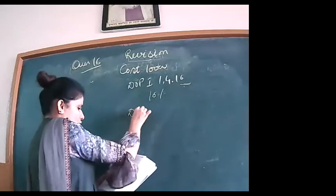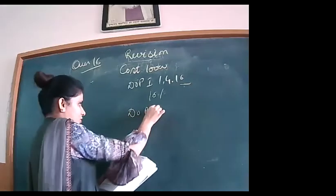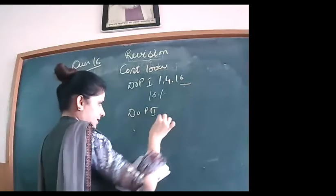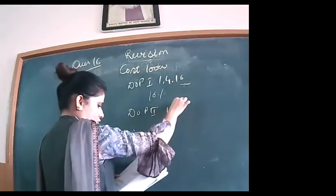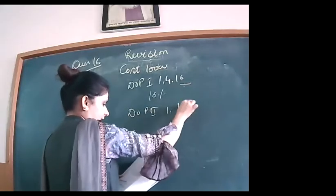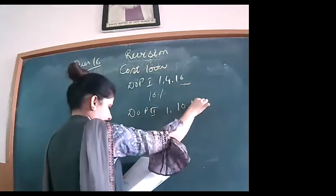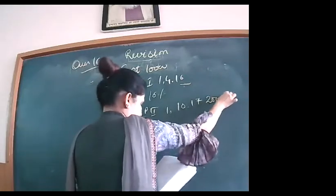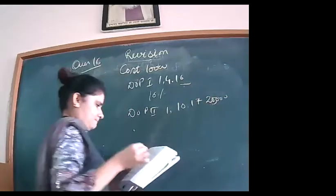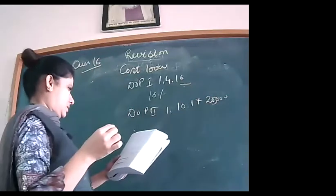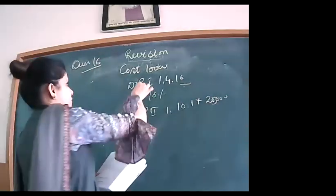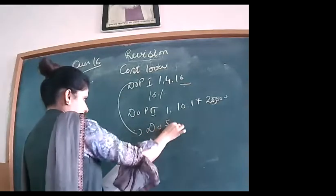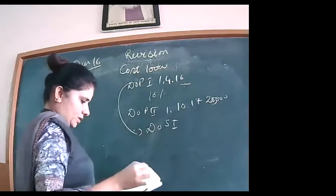A second machinery was purchased on 1st October 2017 (DOP 2, 10th month) for ₹20,000. The first machine is sold for ₹8,500. The question asks to prepare the ledger account for three years: 2016–17, 2017–18, and 2018–19.